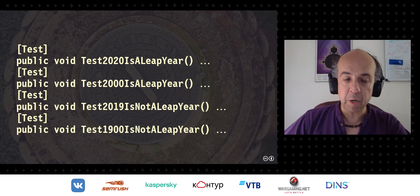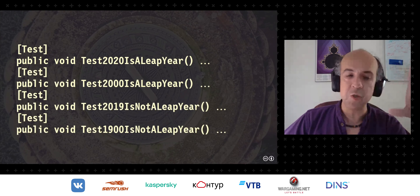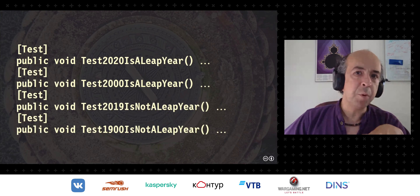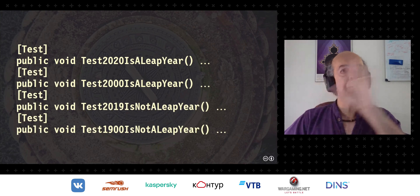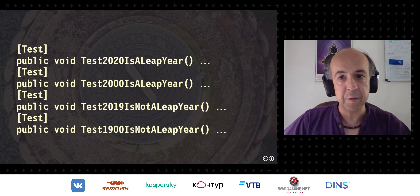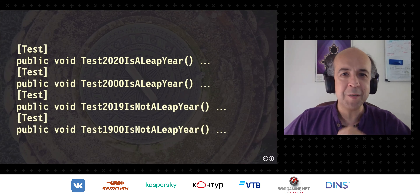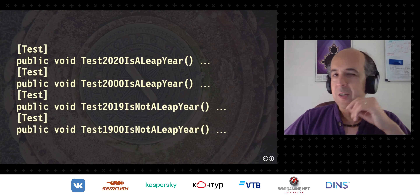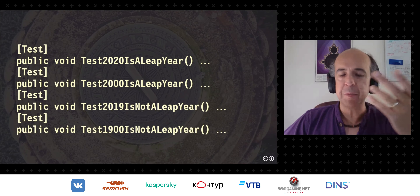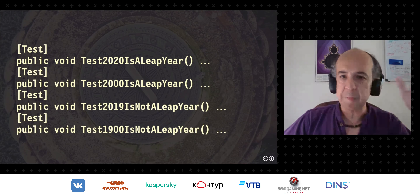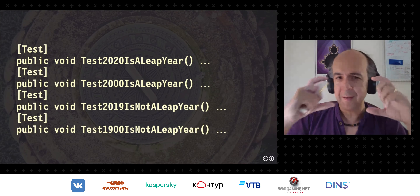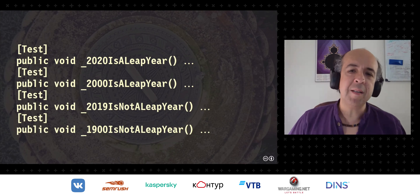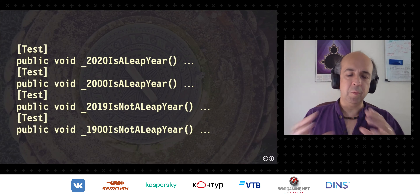These test cases start revealing the shape of the domain. Let's assume you know nothing about leap years — you just see four numbers without knowing the relationship. You haven't actually told anybody anything; you've just put hardcoded literals in. Let's also get rid of the word 'test' in test names because it's noise — we know it's a test from the annotation. So: '2020 is a leap year.'